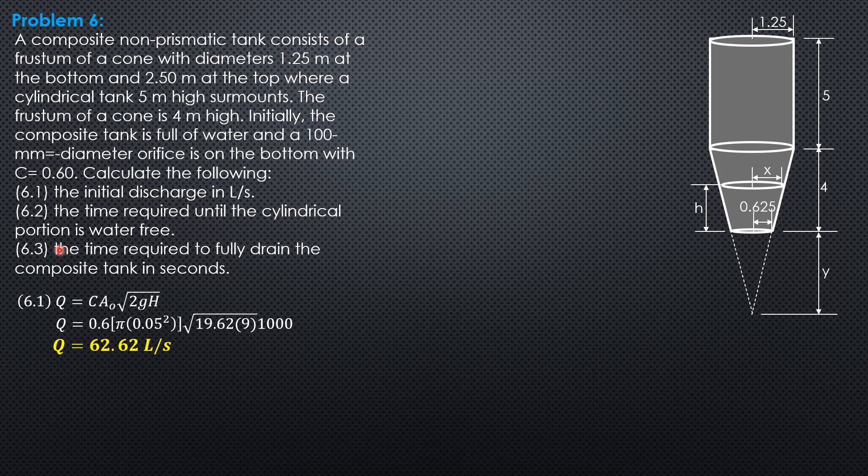The time required until the cylindrical portion is water free. Take note that the cylindrical portion has constant area S. So the time it takes for the surface to drop by 5 meters is t = (2S/CA₀√(2g))(√H₁ - √H₂), where area S is constant. So that's the formula where area S is π(1.25)². Initial head 9 meters. Final head would be when the cylindrical portion is water free, then the final head is 4. Then C is 0.6, area A₀ is π(0.05)², then √19.62.